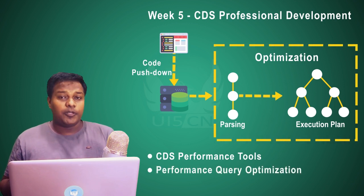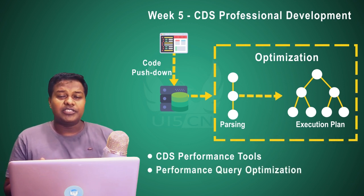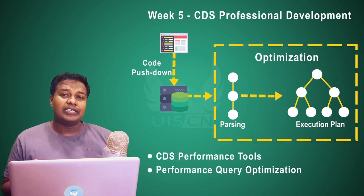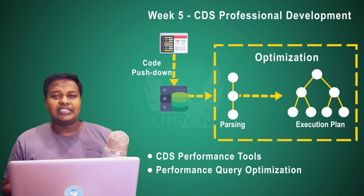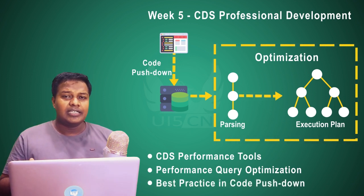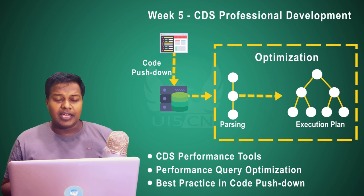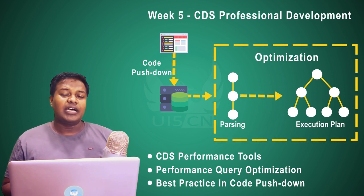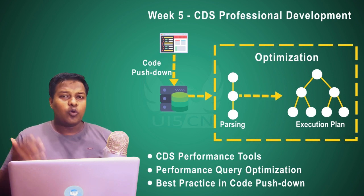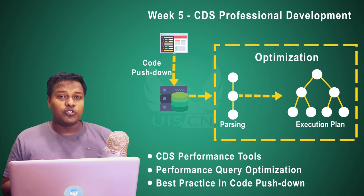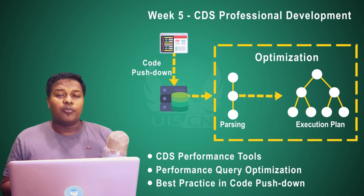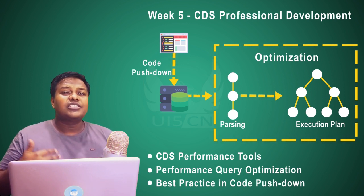There are certain computation optimization or query optimization techniques which happen by default by SAP HANA. Everyone is aware that we are bringing the code which we write to the data, because we have a lot of data, so it's optimal to do that instead of making the data go to the code. When we perform the code-to-data operation — or code push down, as we refer to it — what are the things not to be done?